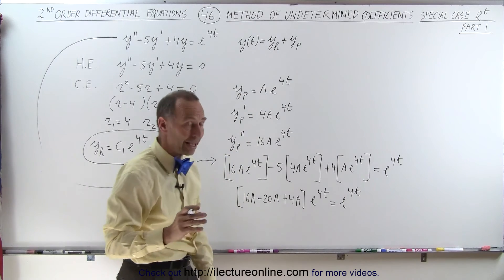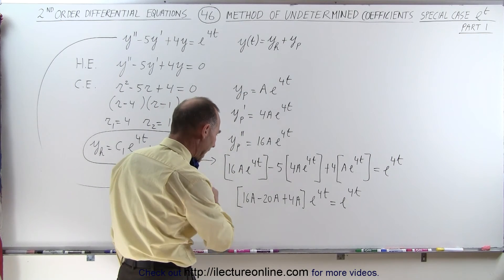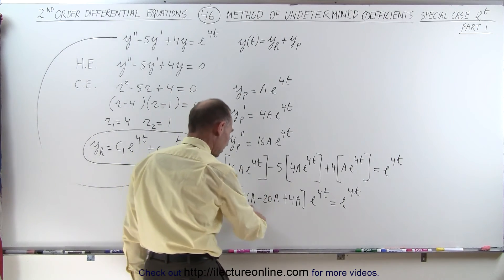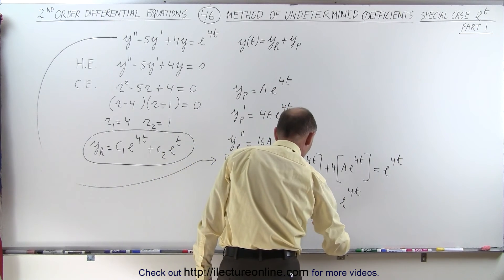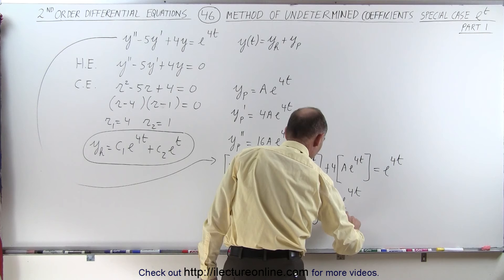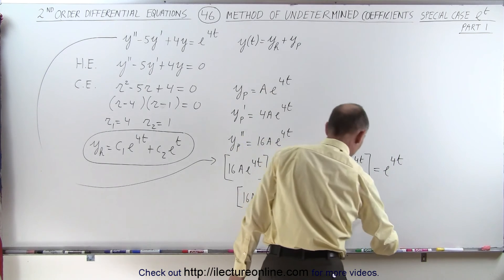Now this should allow us to find a. But notice when we add this together, we get 16 plus 4 is 20, minus 20, that's 0. So we have 0 is equal to e to the 4t. And that, of course, is inconsistent.